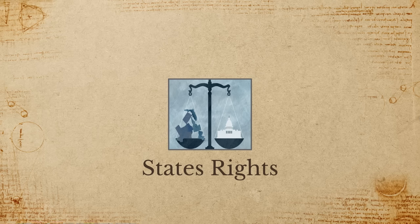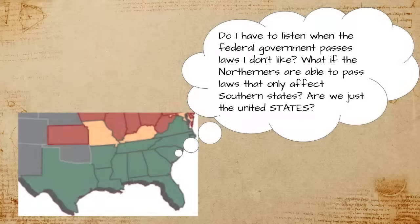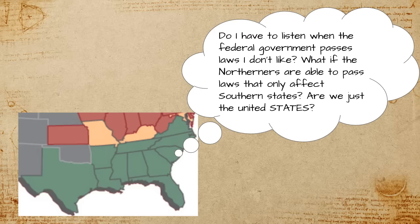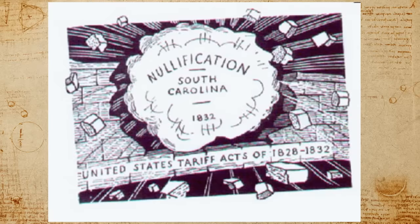The last cause is the issue of states' rights. We talked about something similar with the difference between federalism and centralism — do the states have more power than the central government, or should the central government have the final call on all decisions? The South didn't like many laws being passed by the North and argued that states should be able to decide whether to follow laws. They feared that if the North passed laws to end slavery, they needed to be able to ignore them. This came up when South Carolina nullified a law the North had passed — a tax on cotton — that affected only Southern states, and the South said they didn't have to listen.